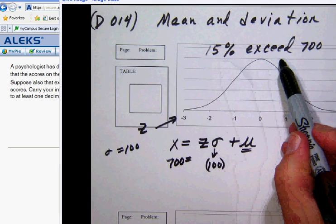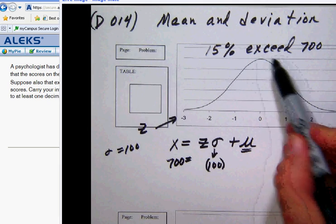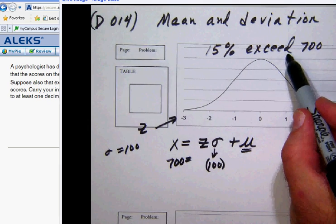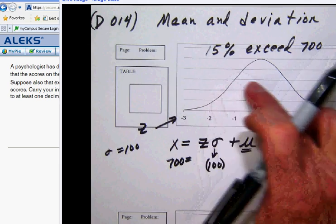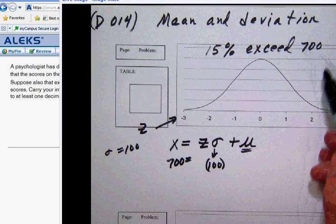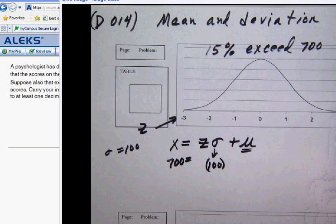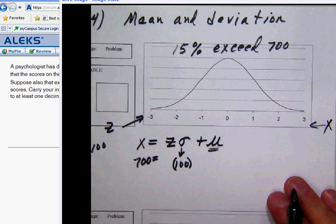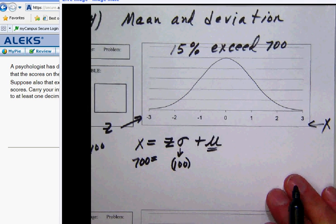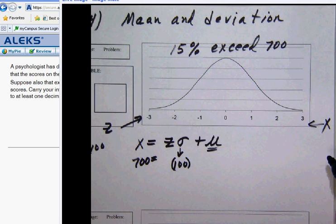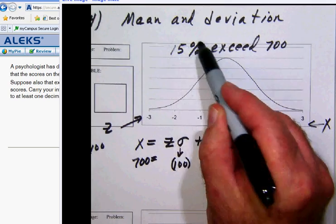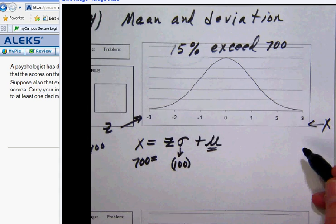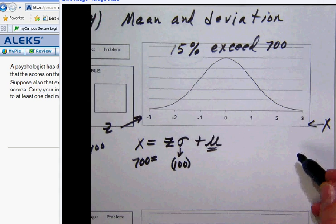Now furthermore, notice that 15% exceed that. Now exceed means greater than. So only 15% of the area under the curve is going to be greater than the x scores. And of course we don't have those labeled, but we would normally put them over here. That only 15% exceed that value. Well, if that's the case then, that 15% that they're talking about here has to be the high end, the top 15%.